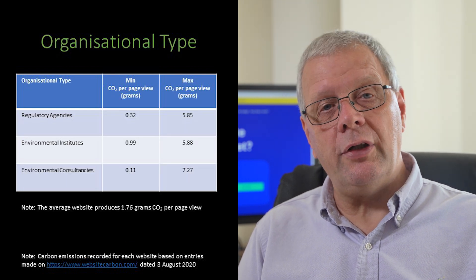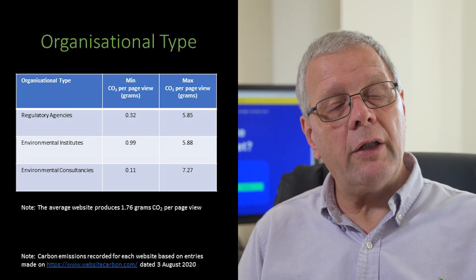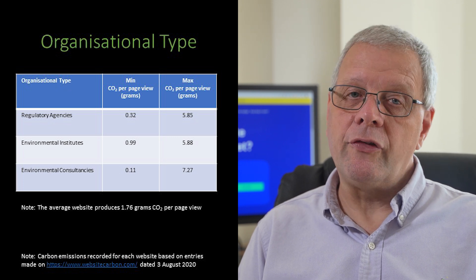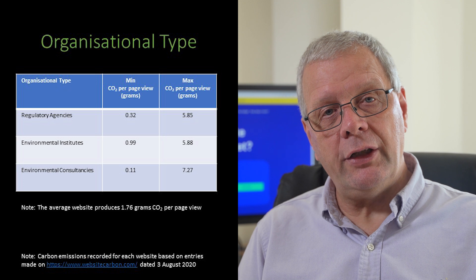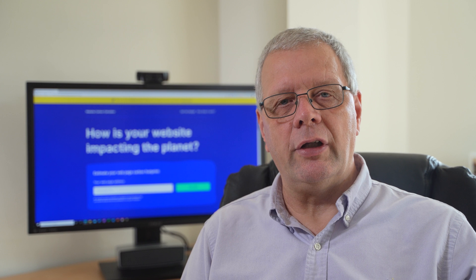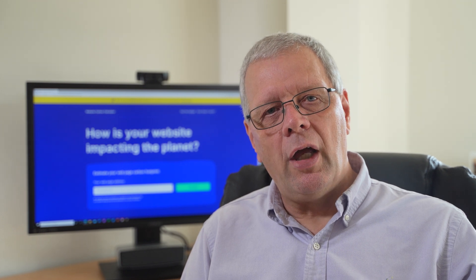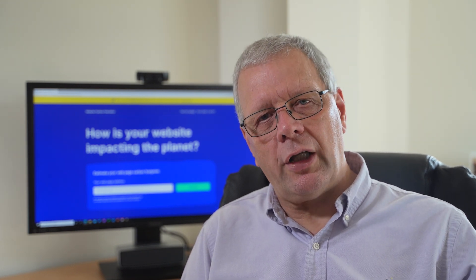I have summarised the estimated carbon emissions for each of the three groups tested, with their minimum and maximum values, as well as a useful benchmark of 1.76 grams of CO2 per page view as the average for websites that have been tested. It should be emphasised that the Website Carbon Calculator is estimating the carbon intensity of the main web page and is based on a number of assumptions necessary due to the complexity of website management and data transmission across the internet. However, it is a good point of comparison and brings us closer to the day when internet usage can be determined more accurately.